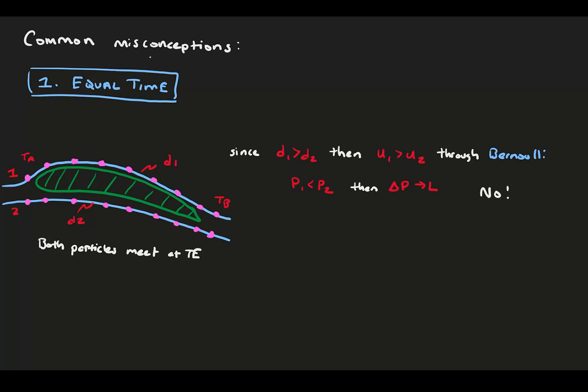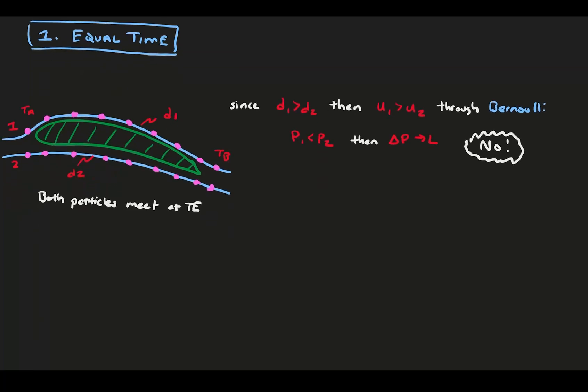The primary flaw in this argument is that there's nothing forcing the two particles to meet at the same time in the back of the foil. The top particle does not care about the underside of the foil, and vice versa. Picture a flat shape with one side jagged and rough and the other side smooth. If this principle were to hold true, this would be a shape that produces considerable lift because the top surface is much longer. However, this is not a lift-producing surface.